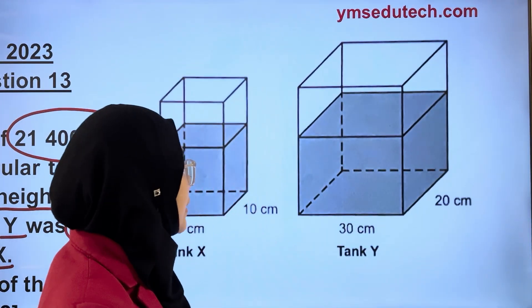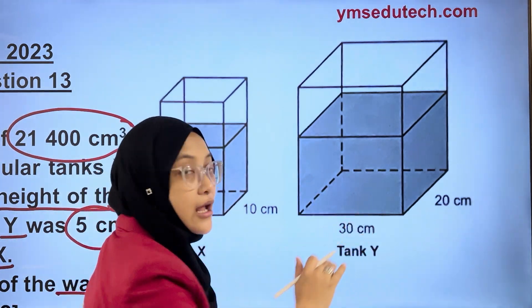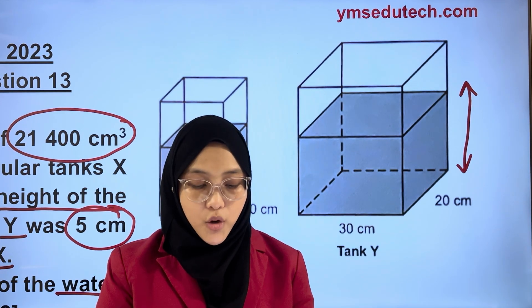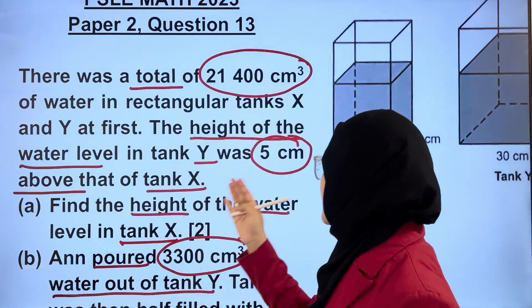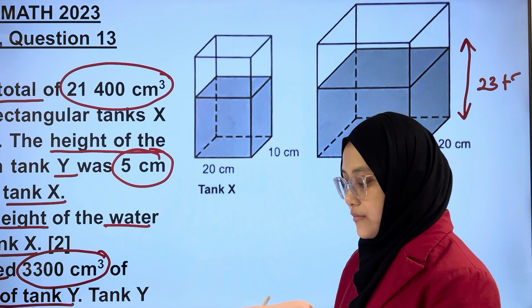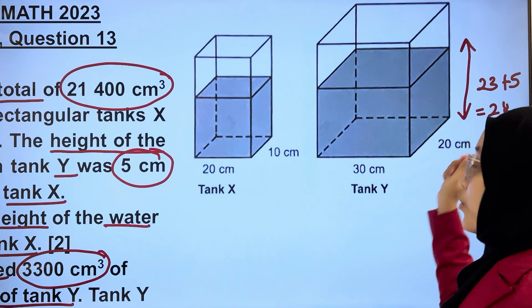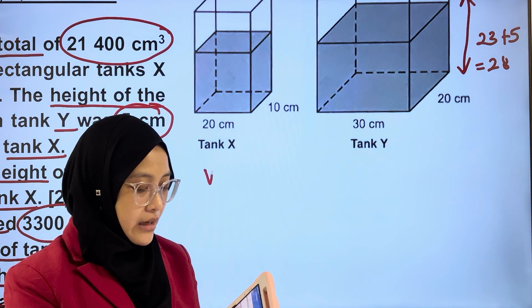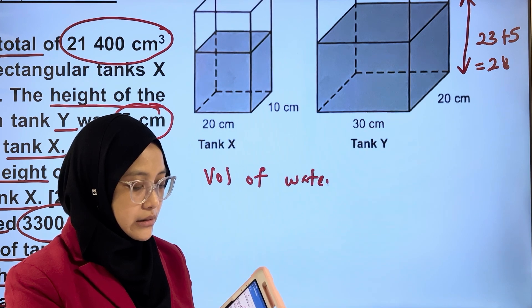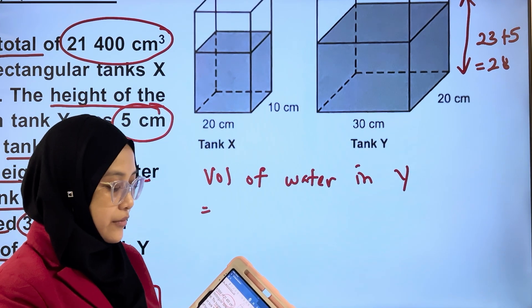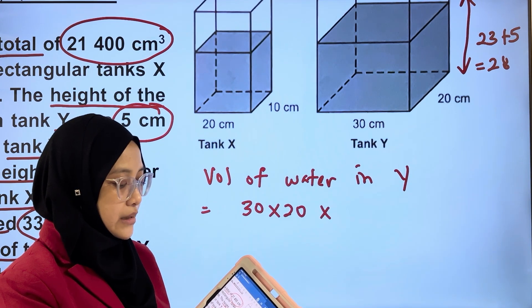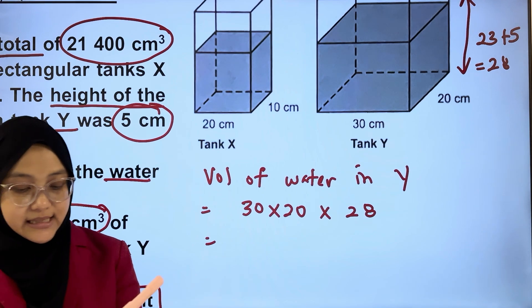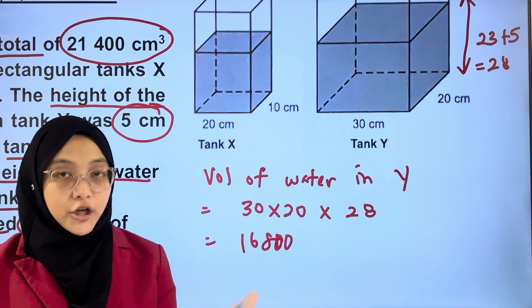In part A, we found that the common height of water for X and Y was 23 centimetres. Hence the height of water in tank Y will be 23 plus 5 cm, which is 28 centimetres. Let's find out how much water is in tank Y. Volume of water in Y equals the base area 30 multiplied by 20, multiplied by 28, that gives us 16,800 cubic centimetres of water.